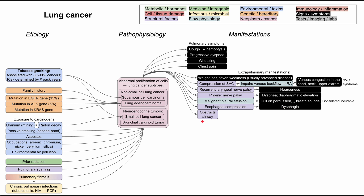Esophageal compression can result in dysphagia — difficulty and pain with swallowing. A mass effect on the airway can lead to lung atelectasis and secretion stasis, both of which predispose to bacterial colonization and subsequent lung infections. This is called a post-obstructive pneumonia — lung cancer blocks bacterial clearance and causes pneumonia.